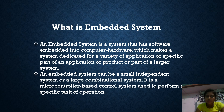What is an embedded system? An embedded system is a system that has software embedded into computer hardware, which makes a system dedicated for a variety of applications, or a specific part of an application or product, or part of a larger system. An embedded system can be a small independent system or a large combinational system. It is a microcontroller-based controller system used to perform a specific task and operation.